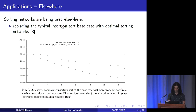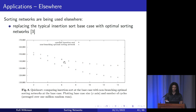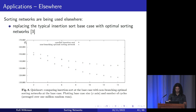Sorting networks are also being used elsewhere. Research has explored replacing the typical insertion sort base case in standard library sorting routines with optimal sorting networks. On this plot, each point represents one run of sorting 10,000 items; the x-axis is the base case size (the point at which quick sort switches to its base case implementation), and the y-axis is the number of CPU cycles required. The first trend uses an optimal insertion sort implementation; the second uses optimal sorting networks as the base case. The sorting networks outperformed insertion sort very conclusively.